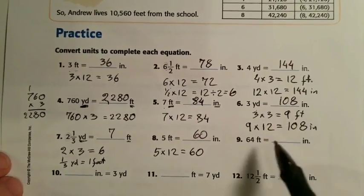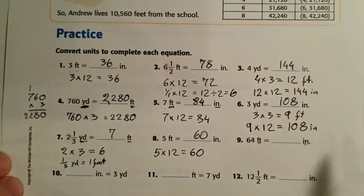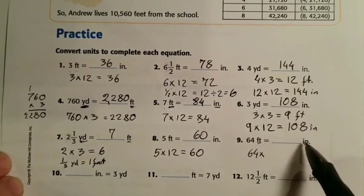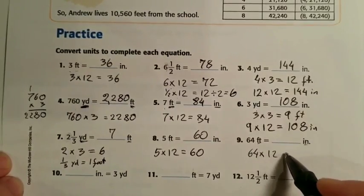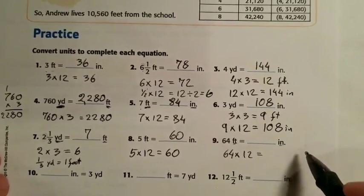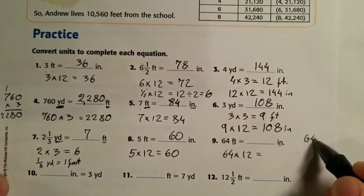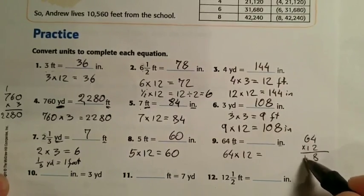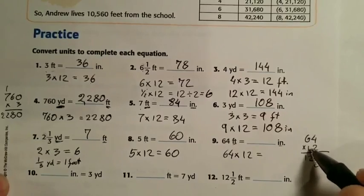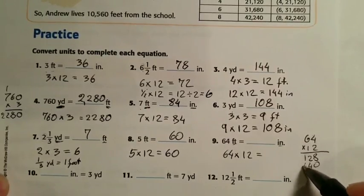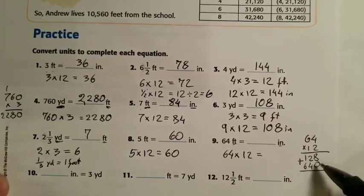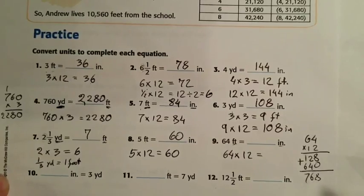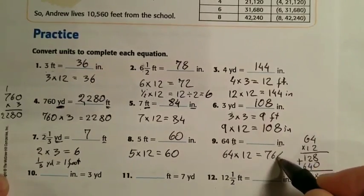Number nine: 64 feet to inches. Larger to smaller, multiply by 12. Doing 64 times 12 on the side: 2 times 4 is 8, 2 times 6 is 12; then 1 times 4 is 4, 1 times 6 is 6. Adding up: 8, then 6+4 is 6... giving 768. The answer is 768 inches.